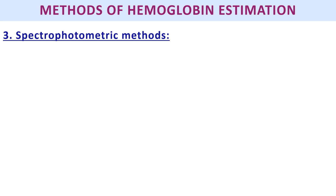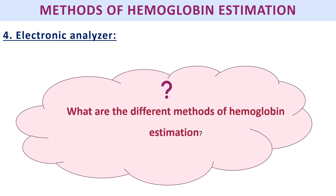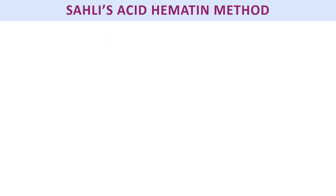In colorimetric methods we compare color with the human eye, which may not be accurate. In the spectrophotometric method, definite wavelengths of light are used to measure hemoglobin derivatives, making it more accurate than colorimetric methods. Finally, there is the electronic analyzer, which is an automatic analyzer. So the four methods are: colorimetric, gasometric, spectrophotometric, and electronic analyzer.